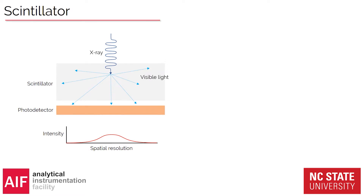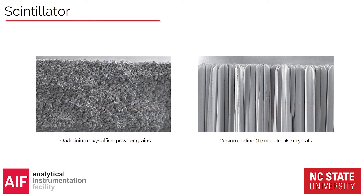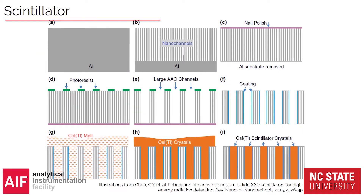Scintillators used to be just a homogeneous layer put on cameras or pixels, and when X-rays came in, the visible light could go in any direction — giving pretty bad spatial resolution. What we actually do today is much smarter: we create reflected layers of crystal structures in the scintillator material where we can actually focus where the visible light goes after it's created, which increases spatial resolution quite a bit. This is how those different layers can look — the cesium iodide looks pretty cool.